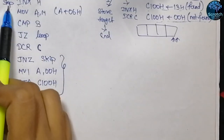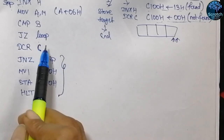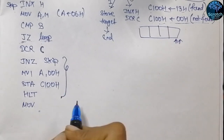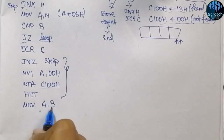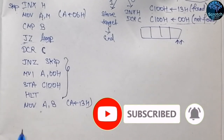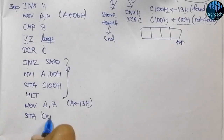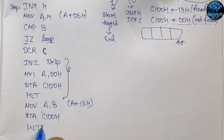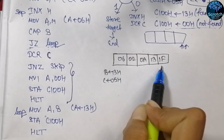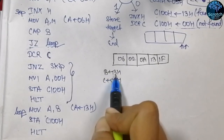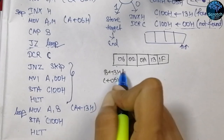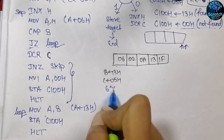When the data is found — meaning the zero flag was set — we jump to the LOOP label. Here we move the data from register B into the accumulator (so the accumulator contains 13 hex in this example), then store it at address C100 hex, and halt. These instructions execute when the search is successful.